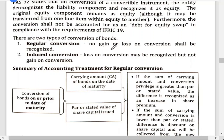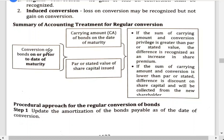For a regular conversion, there is no gain or loss on conversion to be recognized. Meanwhile, in an induced conversion, a loss on conversion may be recognized — but not a gain. For the accounting treatment of regular conversion, whether the conversion happens on or prior to the date of maturity, you first need to get the carrying amount of bonds on the date of conversion, and you also need to get the par or stated value of the share capital issued.